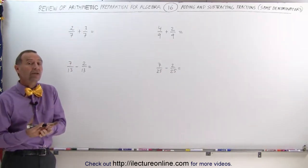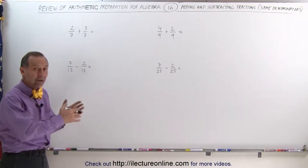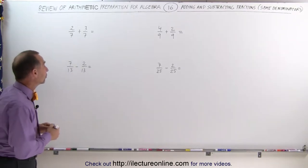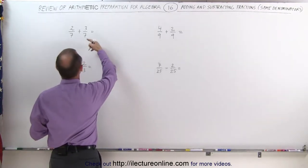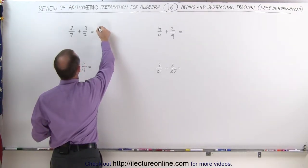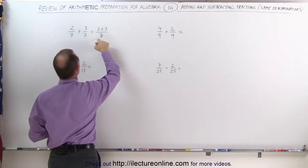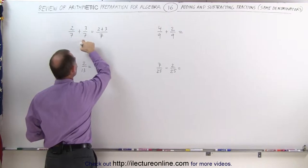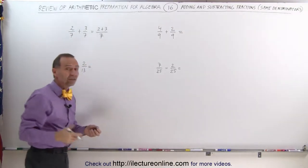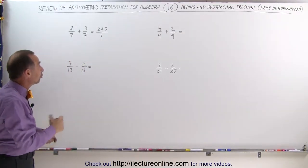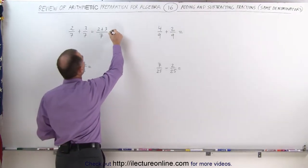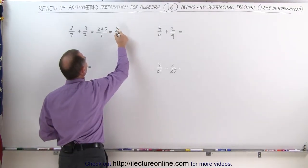When the denominators are the same, all you need to do is either add or subtract the numerators. In other words, 2 sevenths plus 3 sevenths is the same as saying 2 plus 3 over a common denominator of 7. If the denominators are the same, the common denominator is the same 7. And 2 plus 3 is equal to 5, this becomes 5 divided by 7.